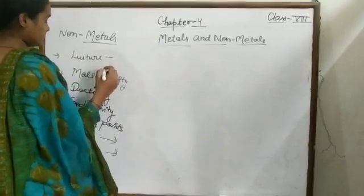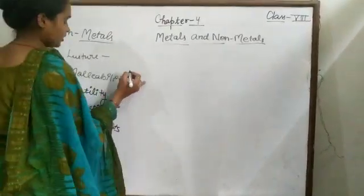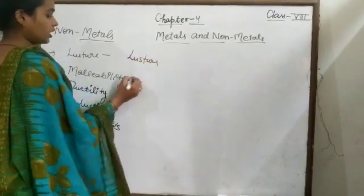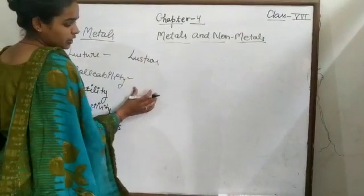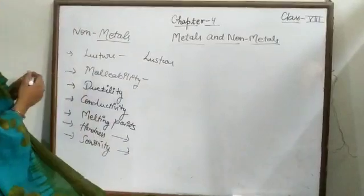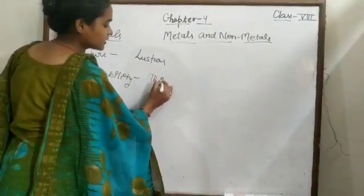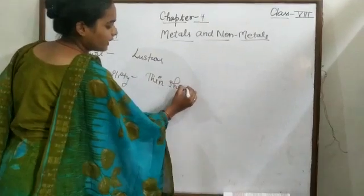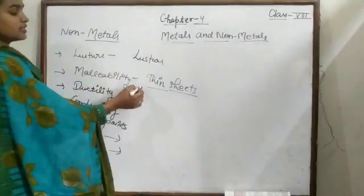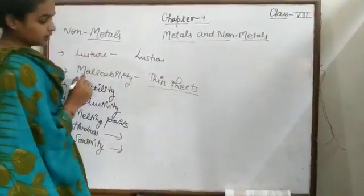Non-metals are non-malleable. That is, they cannot be beaten into thin sheets. Thin sheets cannot be converted. Malleable is meant to be converted into thin sheets. But non-metals are not converted into thin sheets.